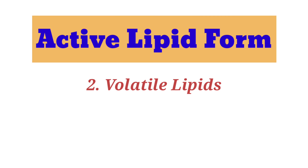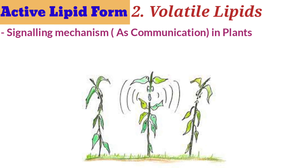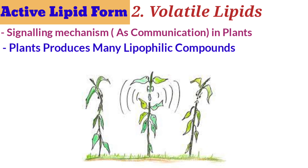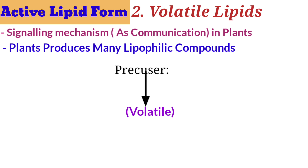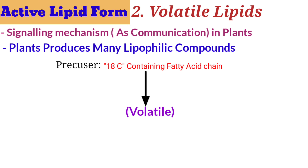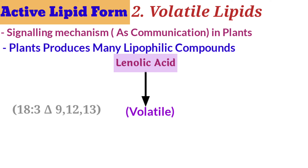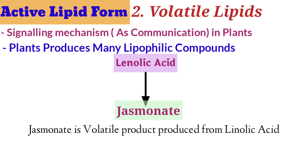Another active form of lipids are volatile lipids, which serve as a signaling mechanism especially in plant communication. Plants produce many lipophilic compounds which are volatile in nature. These volatile lipids are produced from a precursor known as an 18-carbon chain long fatty acid called linoleic acid. Its nomenclature is 18:2, delta 9,12. From this linoleic acid, a compound called jasmonate is produced.